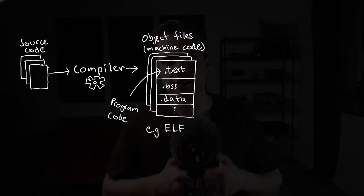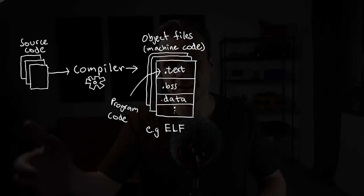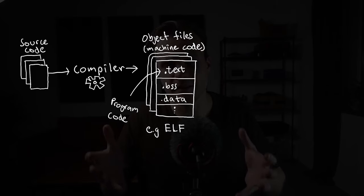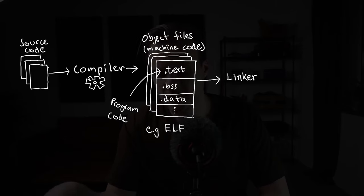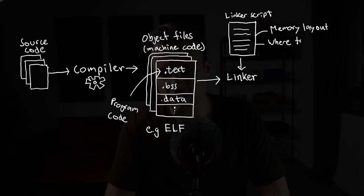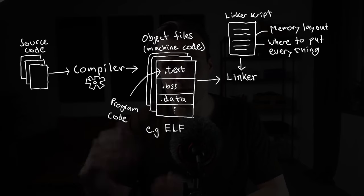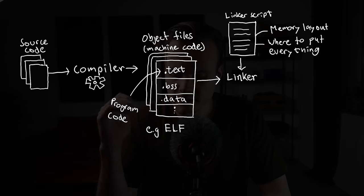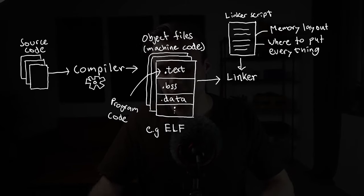When the compiler is done, we're still not ready to put the machine code into our microcontroller because we haven't specified where inside the memory the machine code should end up. That's going to be the main job of the linker. The linker takes a linker script, which describes the memory layout of the microcontroller — it contains information about where the flash memory starts, its start address, and how big it is, and the same information for RAM. The linker script also explains where the sections of the object files should end up inside memory.